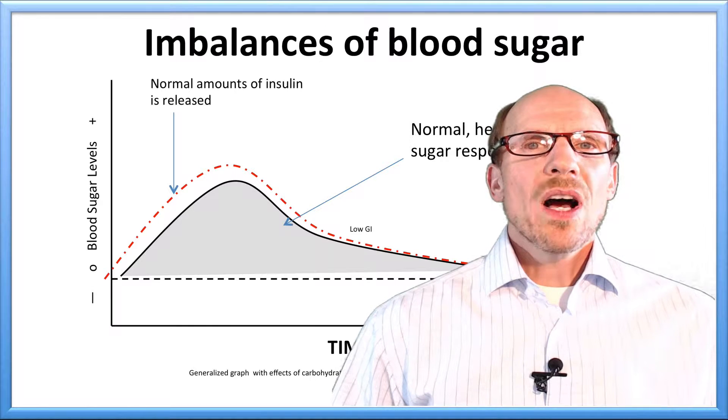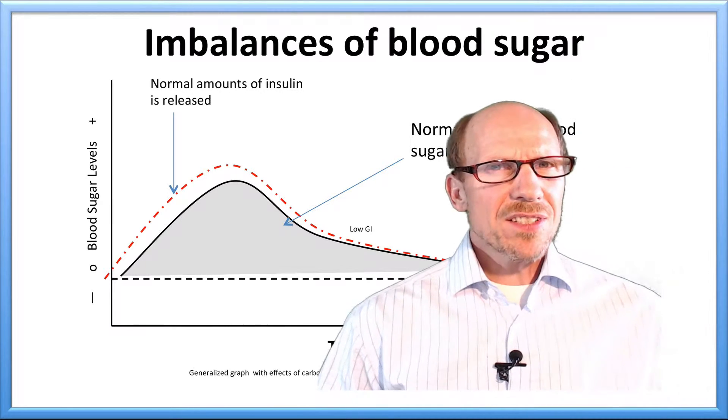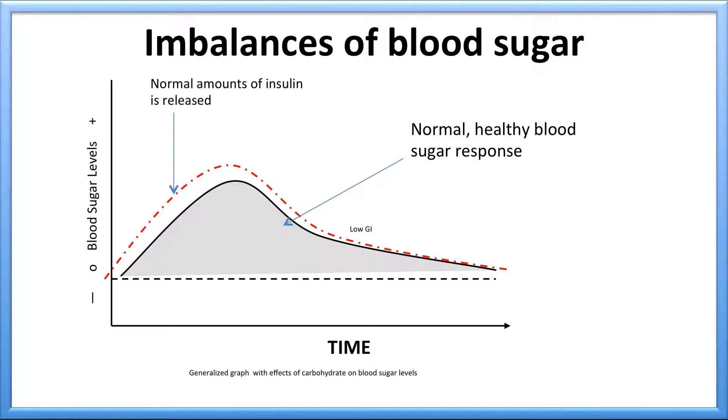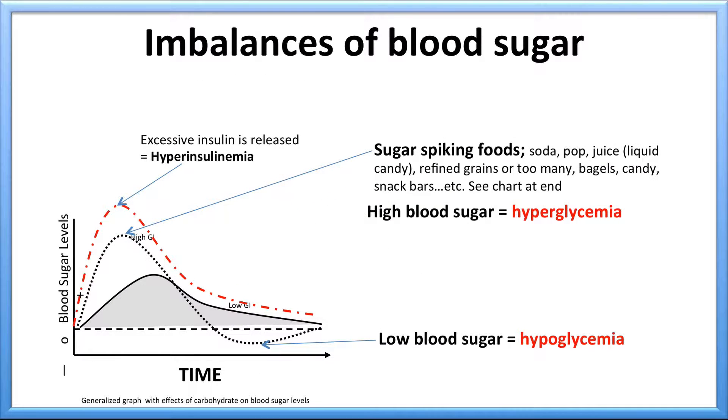Let's do a quick review of the first video in this series. When we have normal intake of sweet products and glucose, the body releases a normal amount of insulin and blood sugar rises then is brought down steadily to a steady state. However, sugar spiking foods can cause hyperglycemia or high blood sugar and excessive insulin release, hyperinsulinemia, which can contribute to hypoglycemia, creating mood swings, sugar cravings, brain fog, and the shakes.